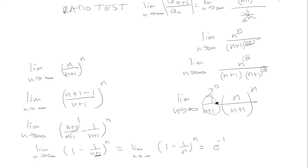And we know that this is going to be e to the negative 1 power. Okay, so we know that this limit goes to 0, and this limit we find out to be going to 1 over e. So I have 0 times 1 over e is 0. This is less than 1, so this converges by the ratio test.